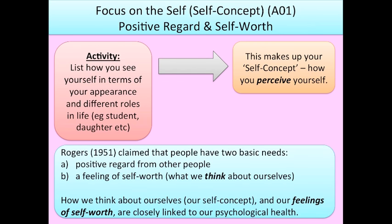Rogers claimed that people have two basic needs: one is positive regard from other people — wanting others to see you positively — and the other is a feeling of self-worth, what you think about yourself. Rogers says how we think about ourselves (our self-concept) and our feelings of self-worth are closely linked to our psychological health. If you don't have a good self-concept and what you've written down is negative, that will make you feel not worthy, and that can lead to feelings of sadness, anxiety, or depression.